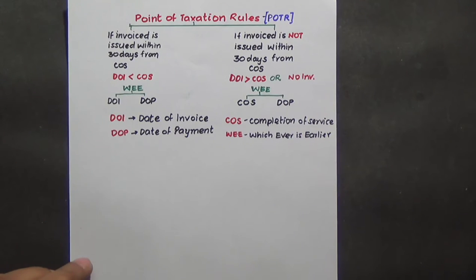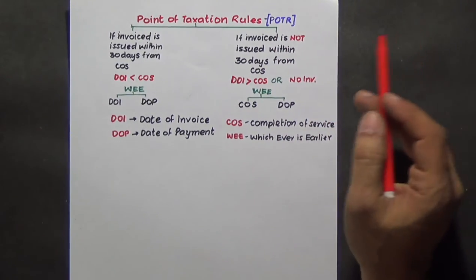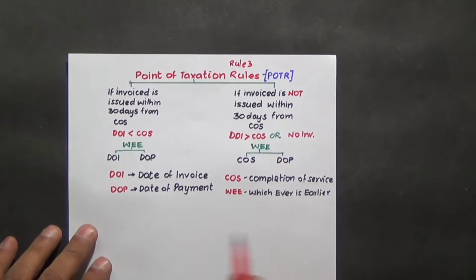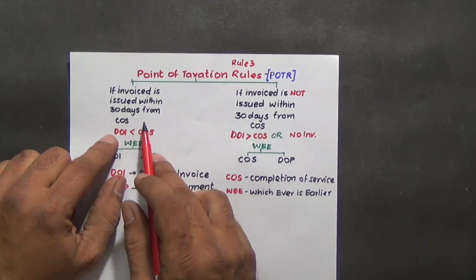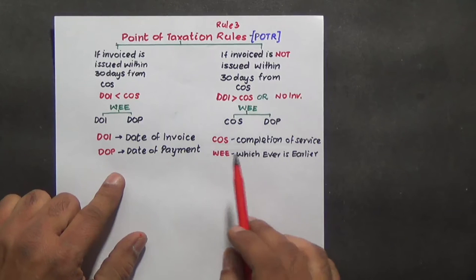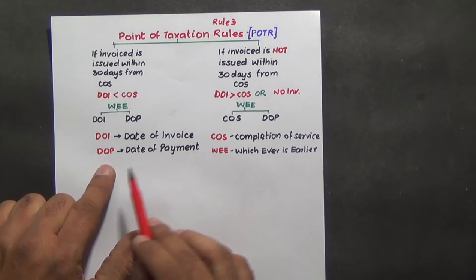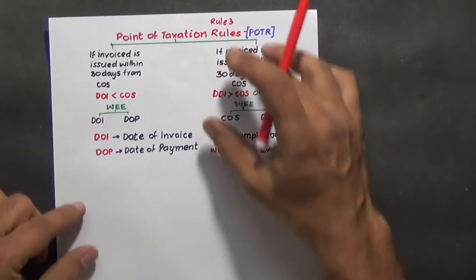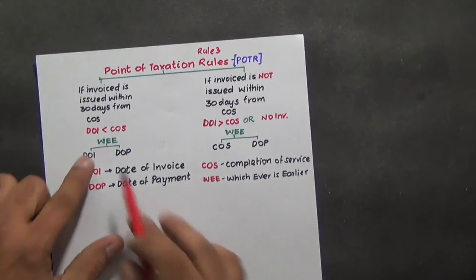Service tax, point of taxation rules, abbreviated as POTR. The rules run like this under Rule 3. The abbreviations used are: COS means completion of service, DOI means date of invoice, DOP means date of payment, WEE means whichever is earlier. These abbreviations are used because memory works based on abbreviation — the mental eye catches these things very fast.